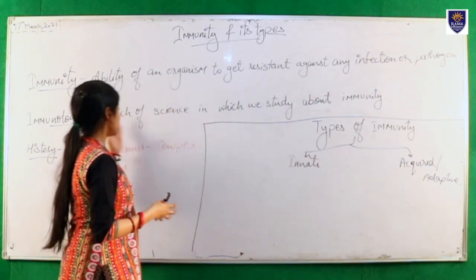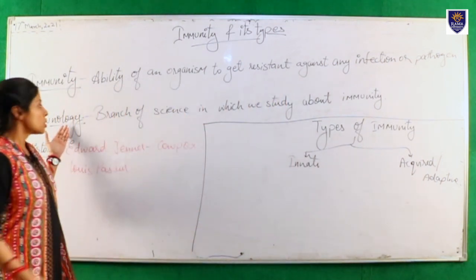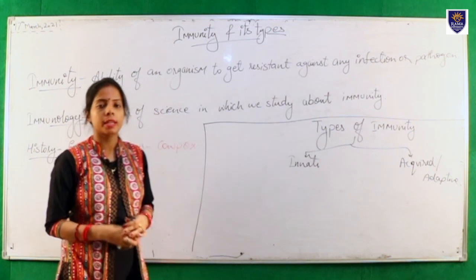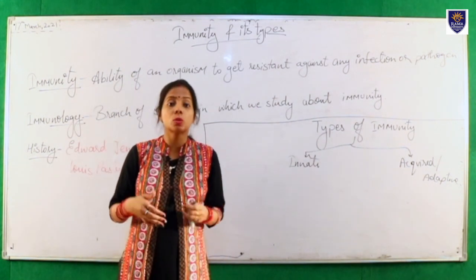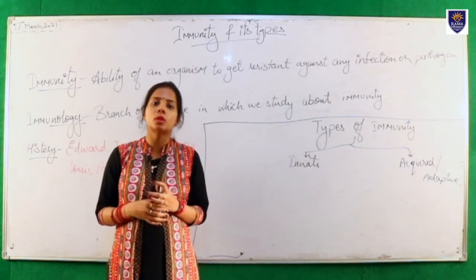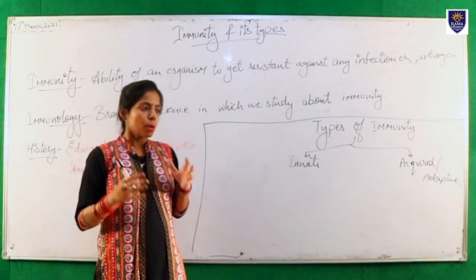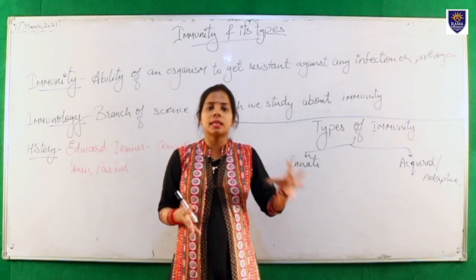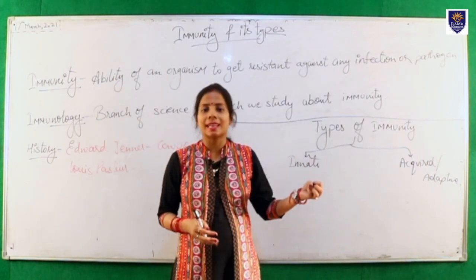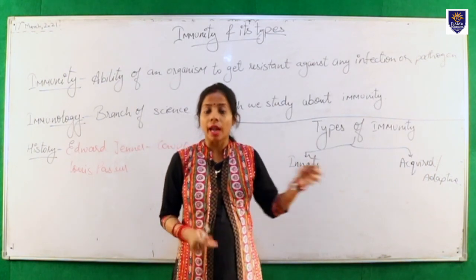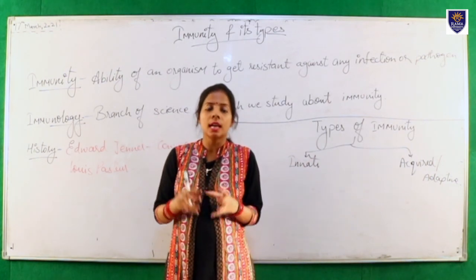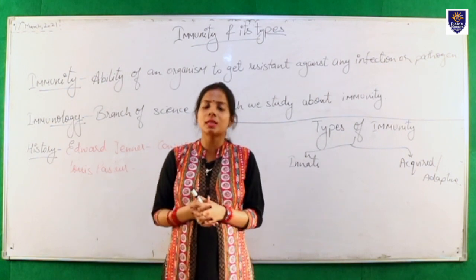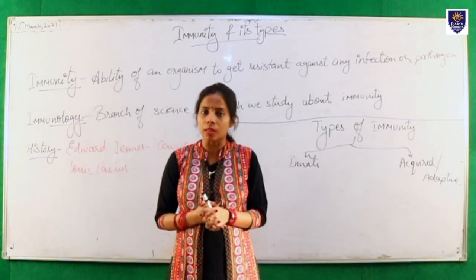Second is immunology. Immunology is the science — or we can say the branch of science — in which we study about immunity. Immunity is the ability to resist against a pathogen, and immunology is the branch of science in which we study about immunity.